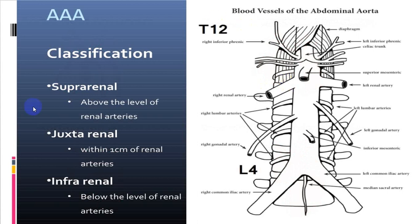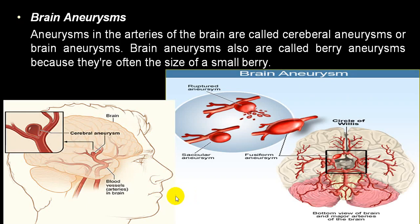In the abdominal segment, when the aneurysm is within 1 cm of the renal artery it is called juxtarenal; above the renal artery it is suprarenal; below the renal artery it is infrarenal. Brain aneurysms are berry aneurysms, and chances of rupture are very common. They are usually saccular and occasionally fusiform in variety.